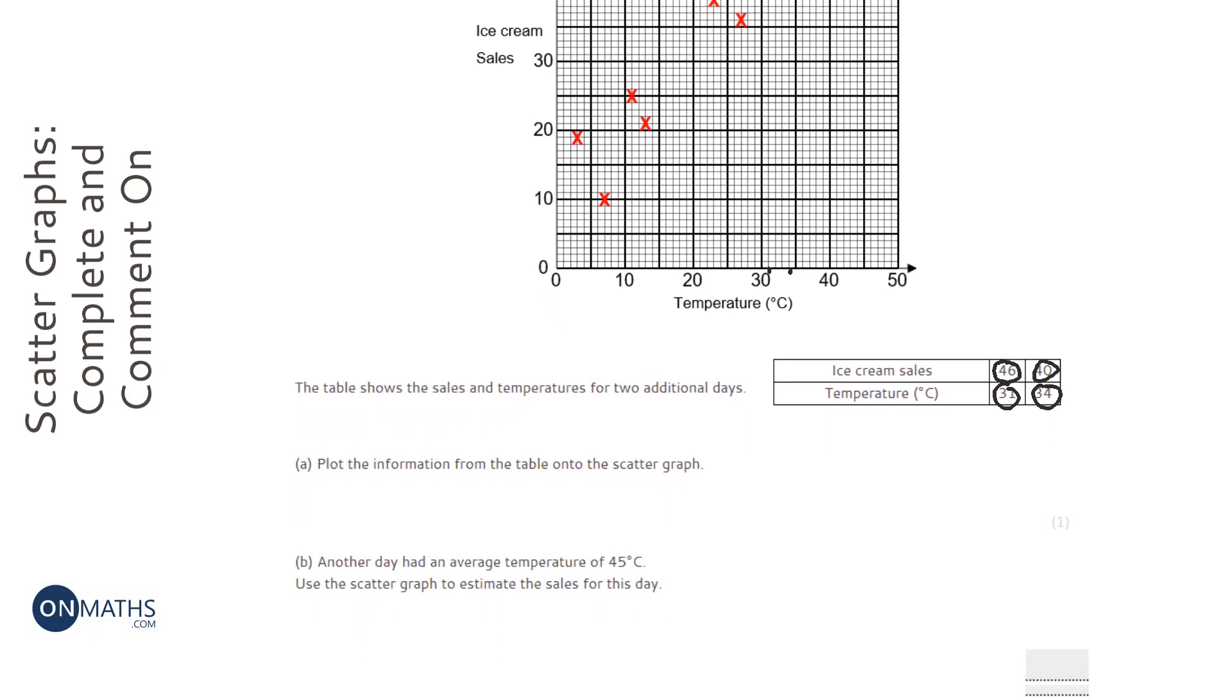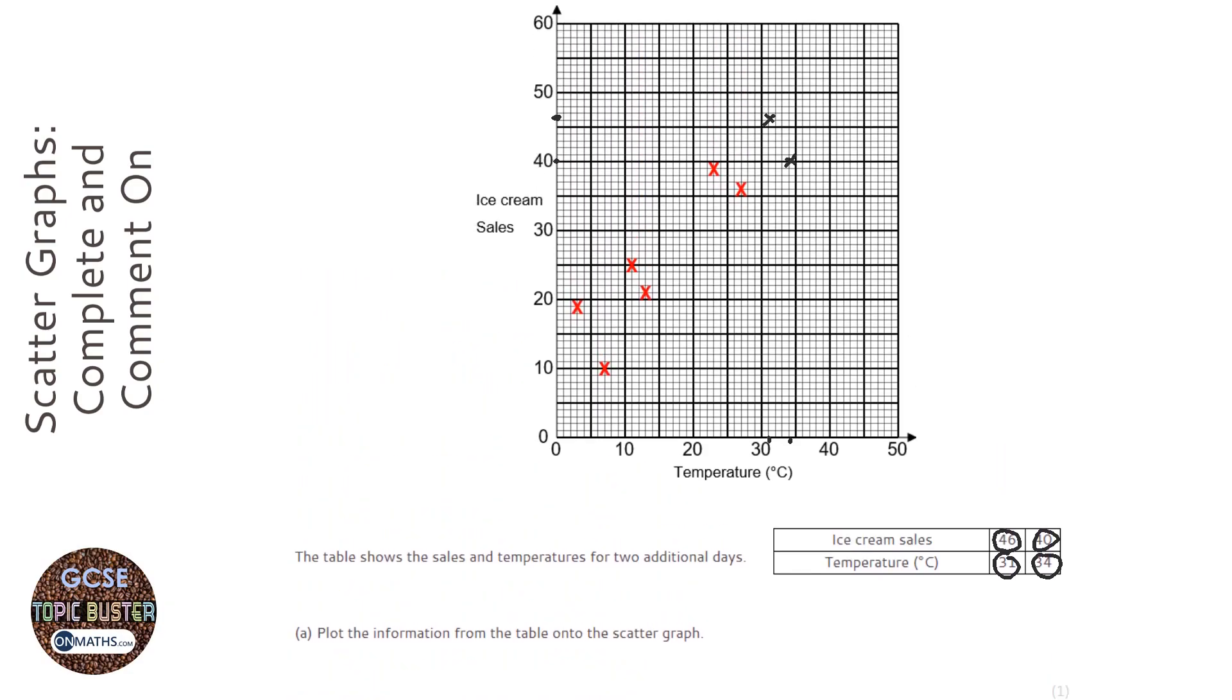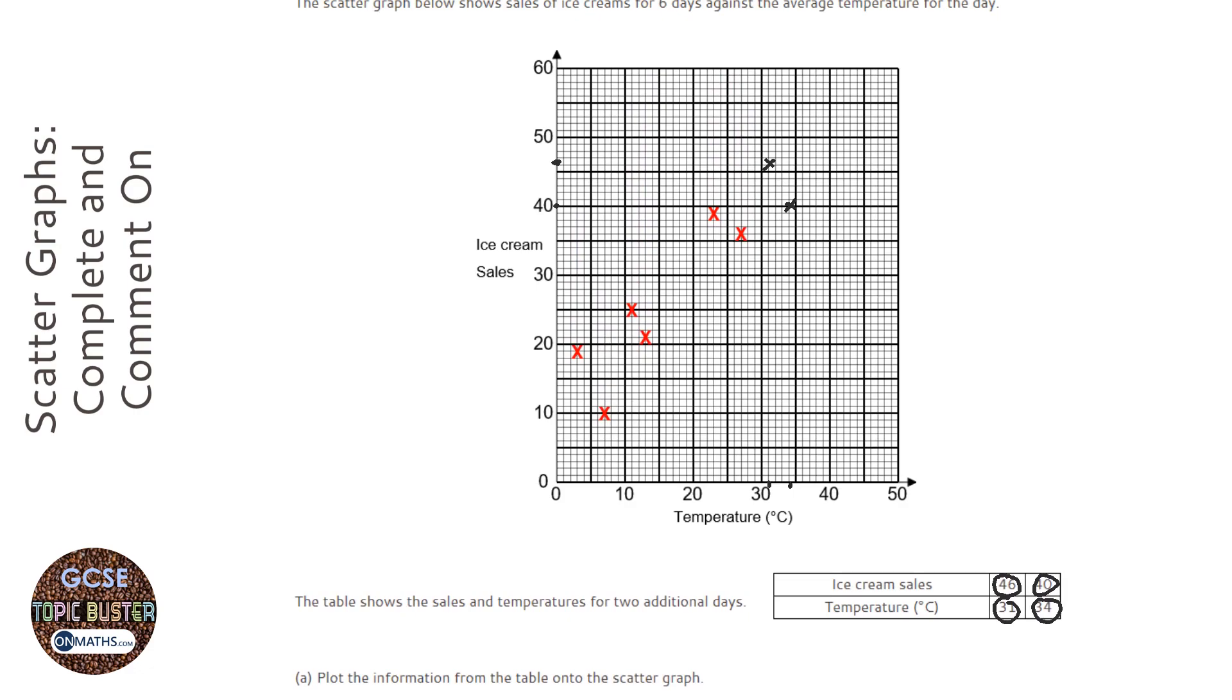The next question says another day had an average temperature of 45 degrees. Use the scatter graph to estimate the sales for that day. Now, you need to get used to drawing a line of best fit for any scatter graph that you come across. Just do it, even if it doesn't ask you to.